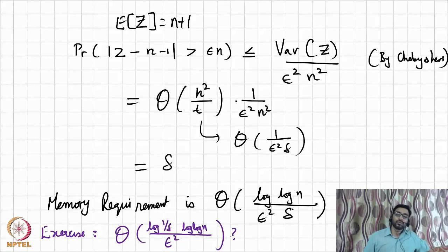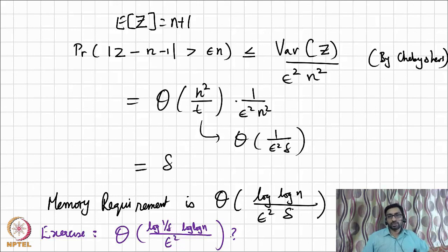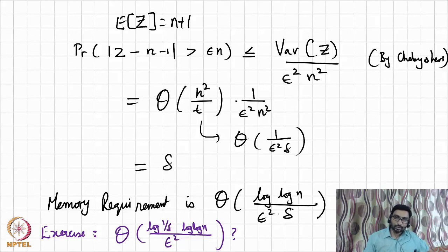Here's an exercise: extend the Morris++ algorithm to achieve a memory requirement of only O(log(1/δ) · log log n / ε²). Instead of a 1/δ factor we get a log(1/δ) factor, which is a significant improvement. As a hint, note that you will have to use the Chernoff bound to achieve this bound.